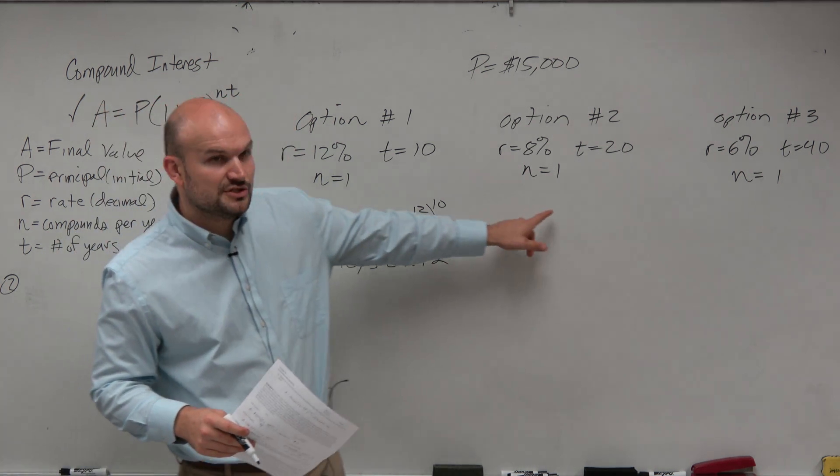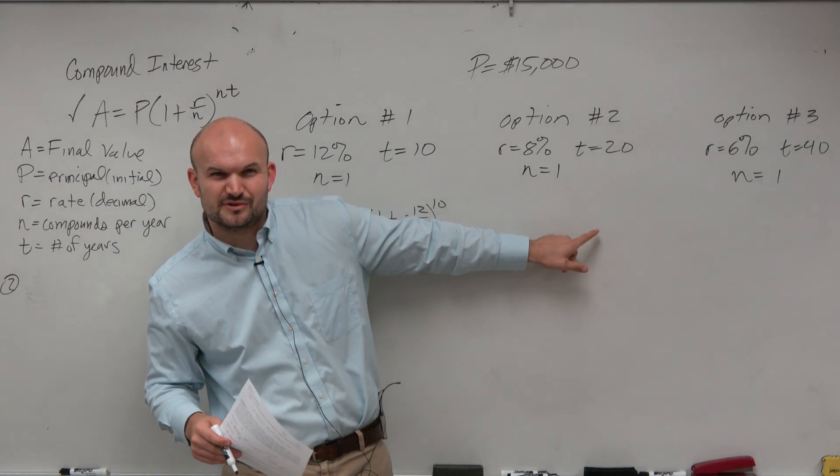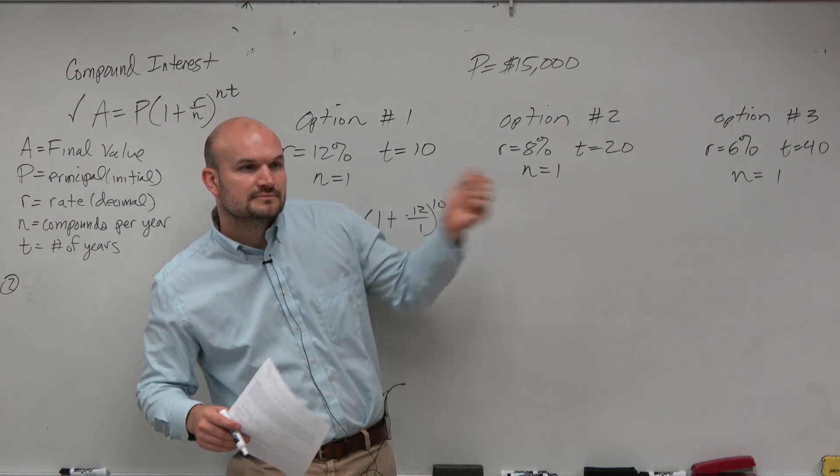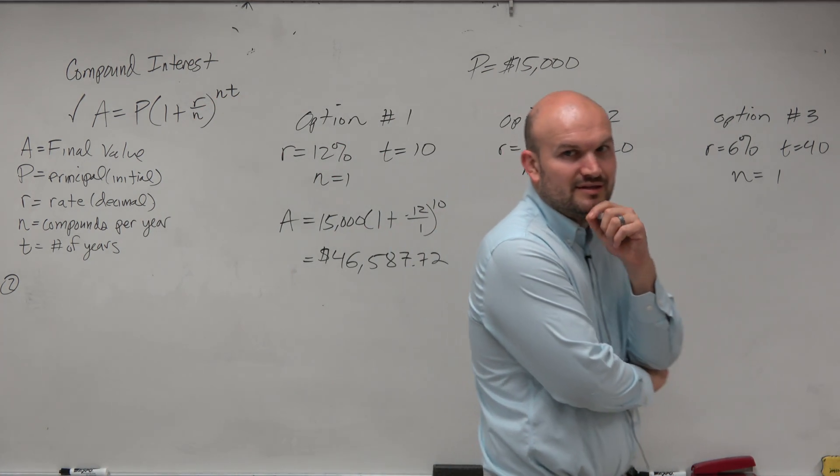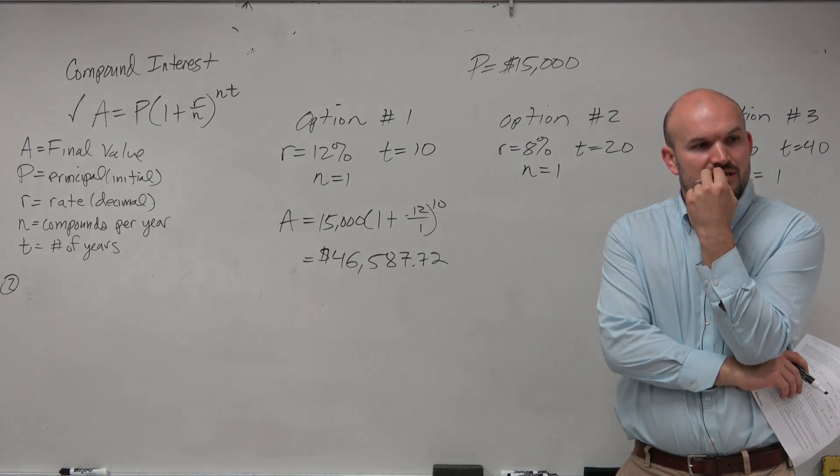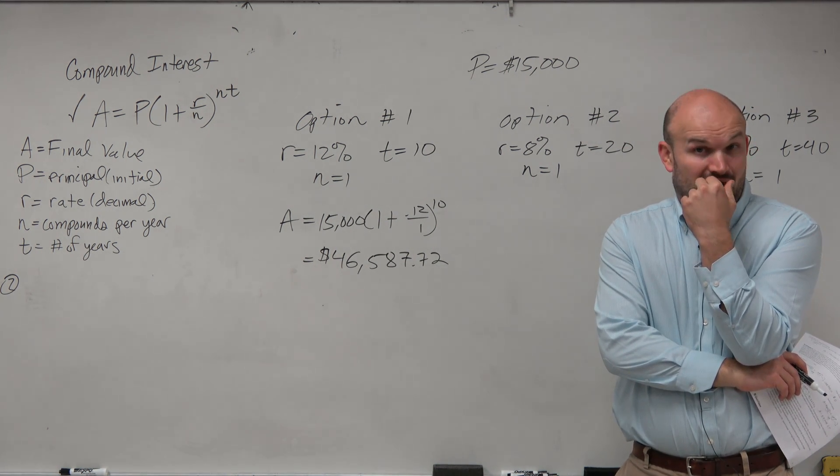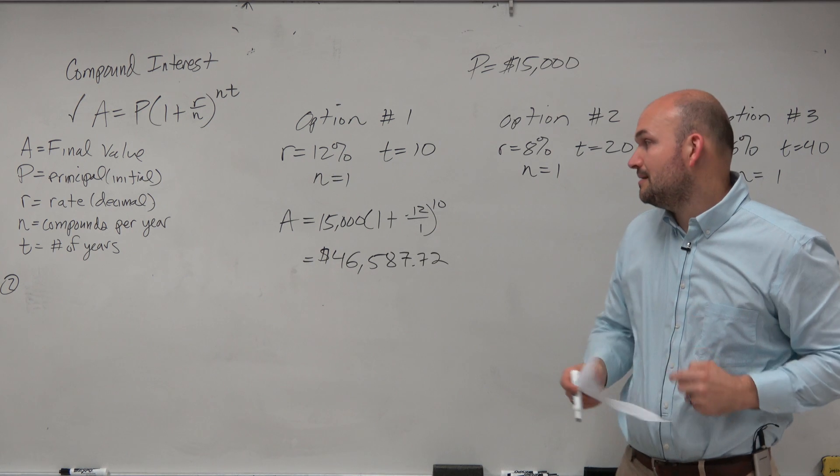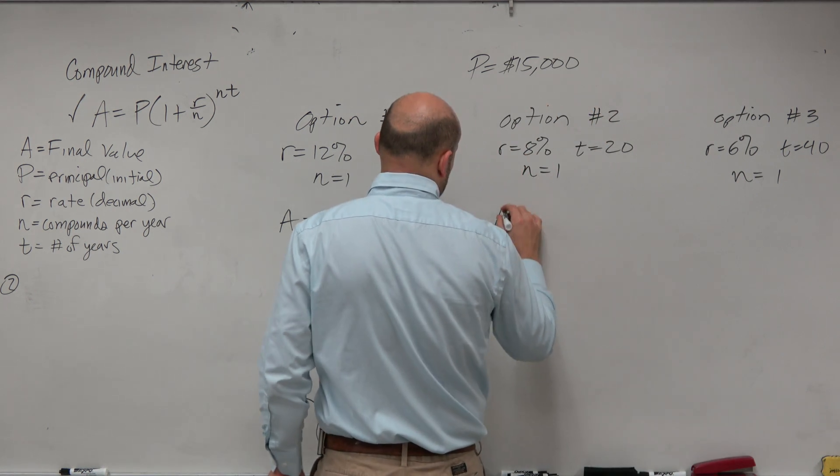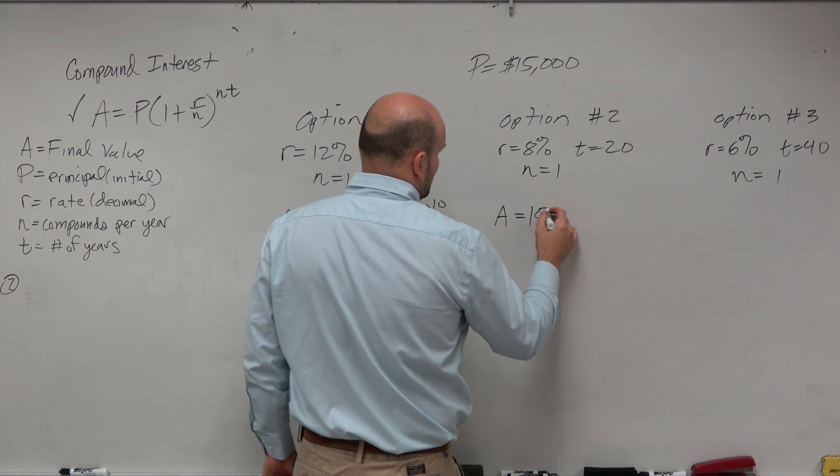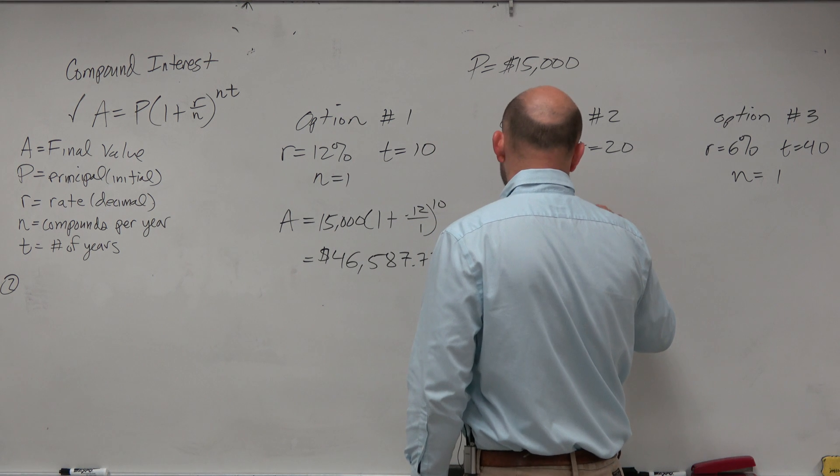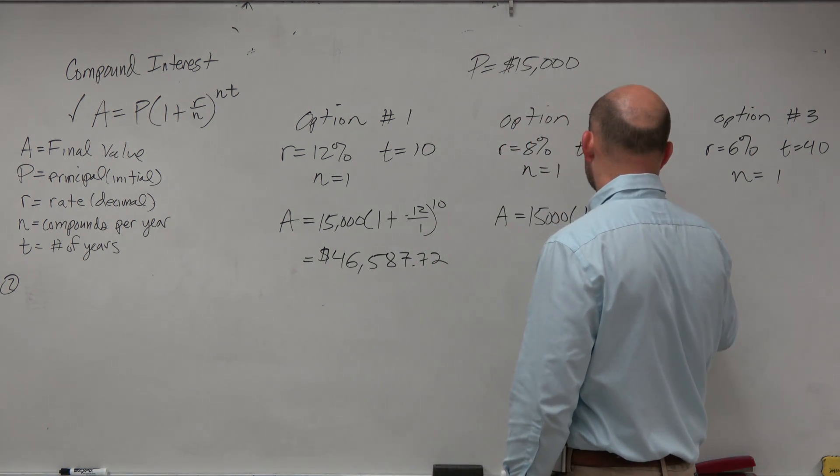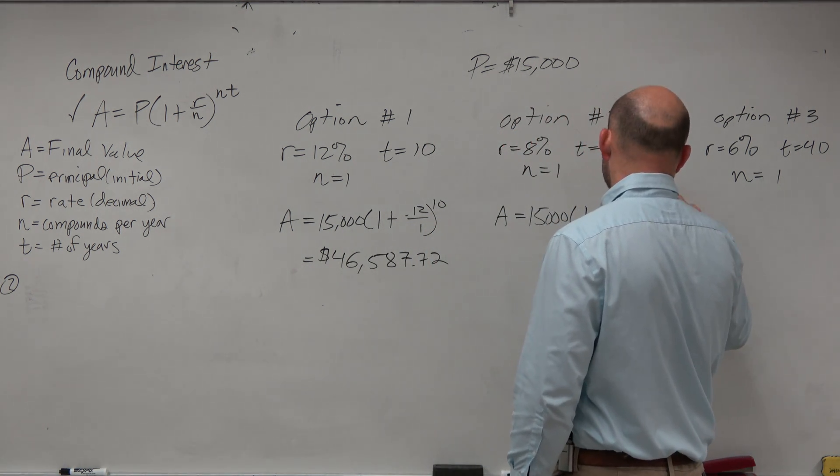So what do you guys think for option two? Should option two, you think it's going to be higher? Reduce the rate? Yep. What do you think? Think reducing the rate's going to increase it? All right, let's see. So again, you put in the 15,000 times 1 plus 0.08 over 1, raised to the 20th power.